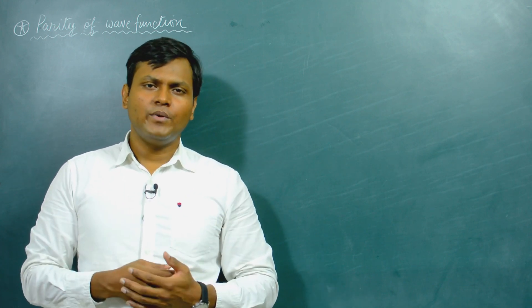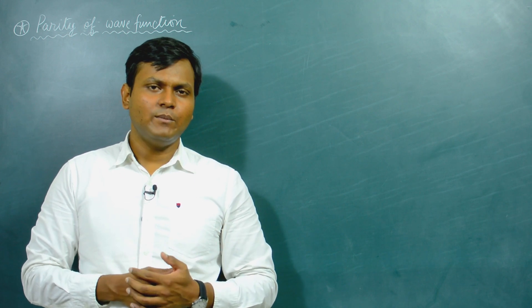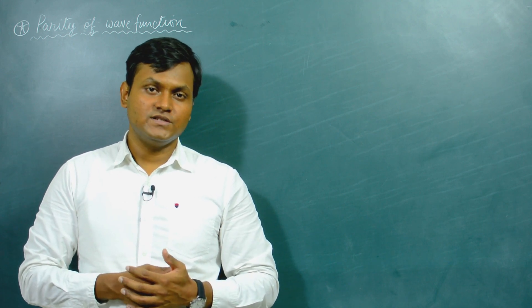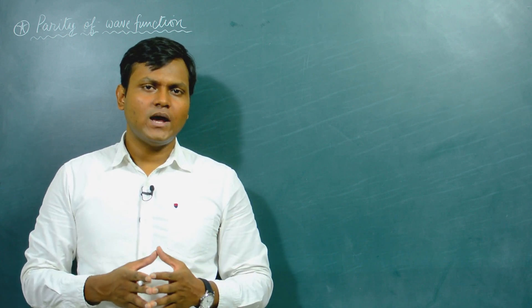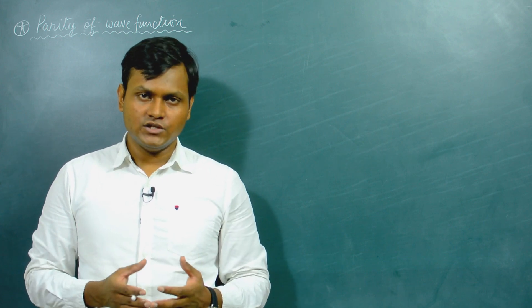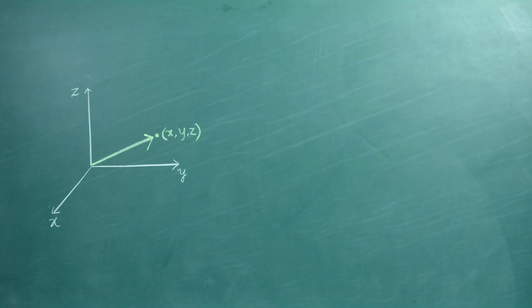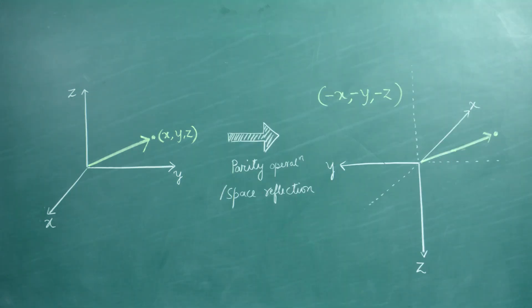A similar kind of operation also exists when we are dealing with mathematical functions. This kind of operation is known as space reflection or parity operation. So if there is a physical quantity which depends on the position coordinates x, y, and z, then the parity operation simply involves a complete reflection of the coordinate axes with respect to the origin.